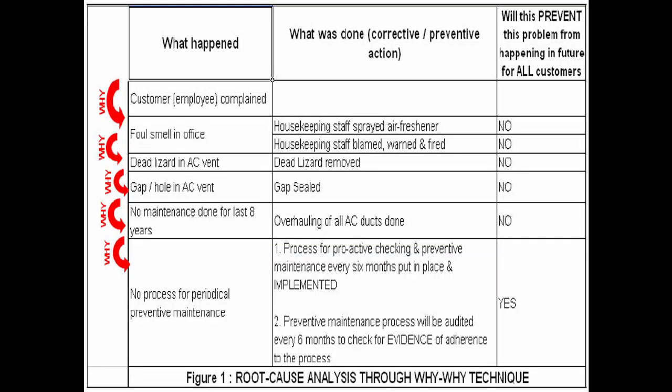This is another example of a YY format. The problem here is a foul smell in the office. The main cause was that mold formed in the air-conditioner vent scenes. The root cause is that preventive maintenance on the AC was not done for the past eight months. The lesson is that preventive maintenance should be done once every six months without fail.